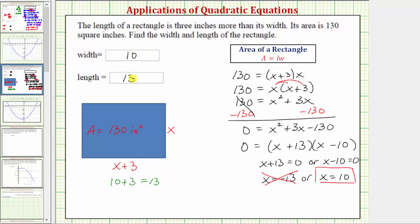The area of a 10 by 13 rectangle would be 10 times 13, which equals 130 square inches. And notice how with these dimensions, the length is three inches more than the width. I hope you found this helpful.